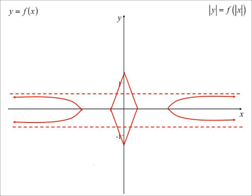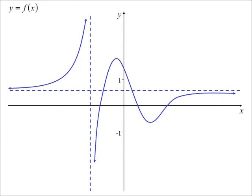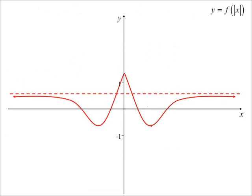Now we can get some really interesting graphs. Consider y = |f(|x|)|, which combines the first and second transformations together. We get reflection in the x-axis and symmetry in the y-axis. The part where x is greater than zero gets reflected in the y-axis, and then the result gets reflected above the x-axis. Starting from the original graph, we apply y = f(|x|) first, then take the absolute value — whatever's below gets reflected above.